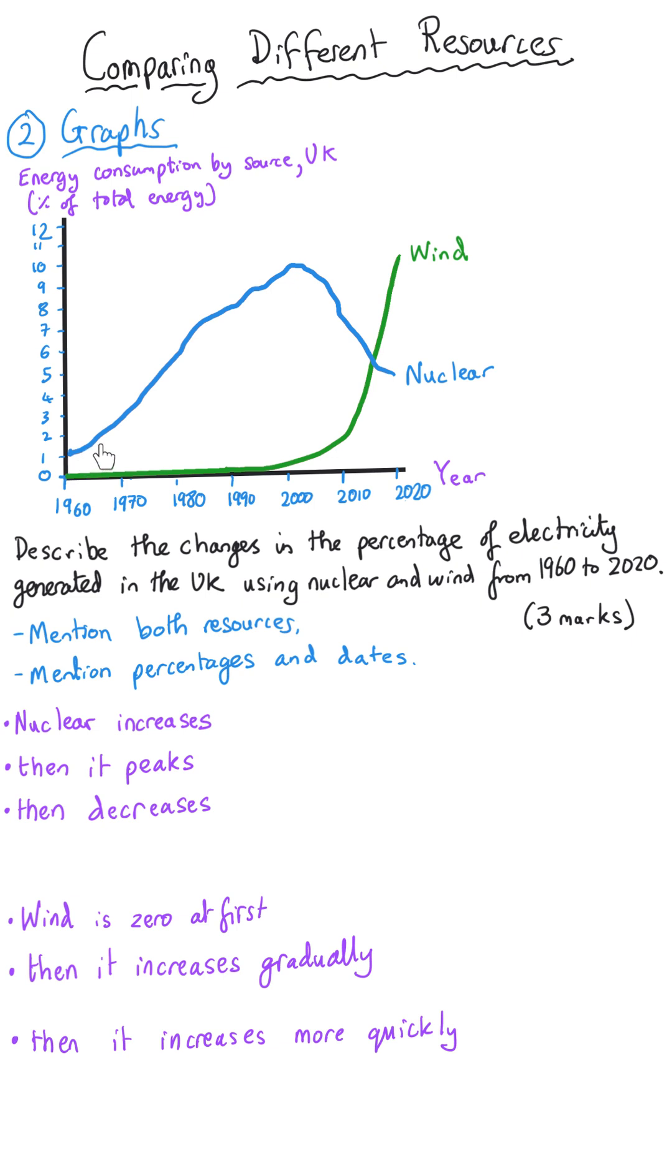And so let's return to the nuclear line. The percentage of electricity generated using nuclear energy began at one percent in 1960 and it peaked at 10 percent. So it increased by nine percent but then it went down to something like five percent in 2020.